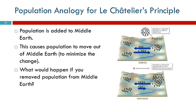So the system responds. It says, you increased the number of people in Middle Earth — well, I'm going to shift in a way to decrease what you did. I'm going to undo what you did to me. So it will reduce the population here by moving some over to Narnia, thus increasing what happens in Narnia. So we're trying to undo the disturbance.